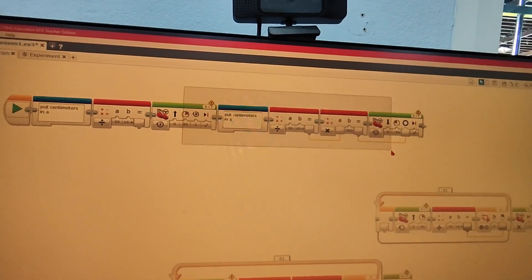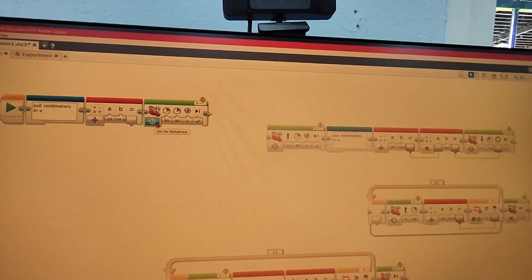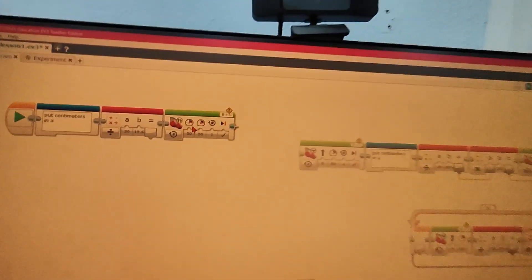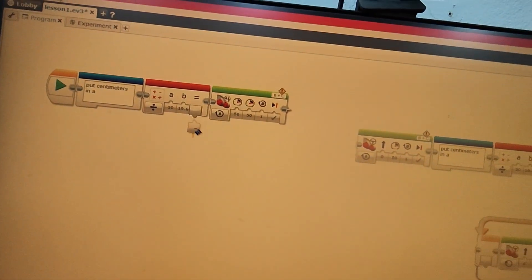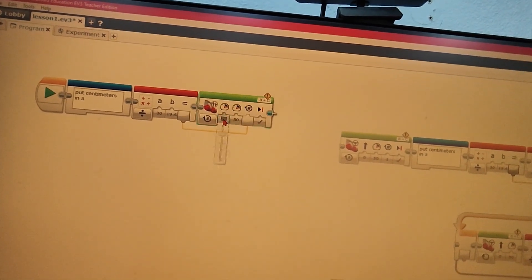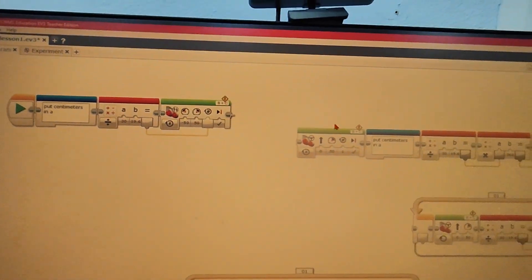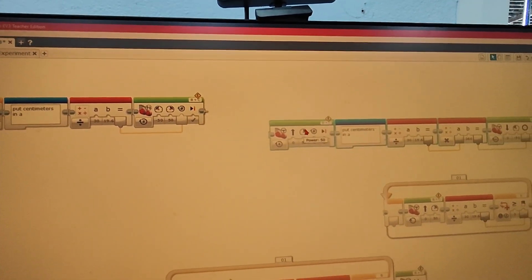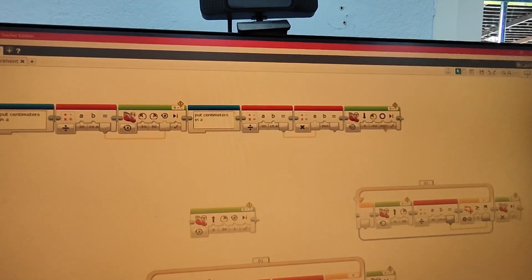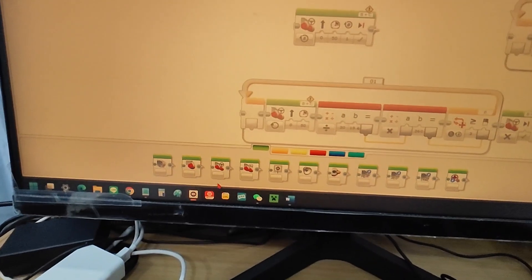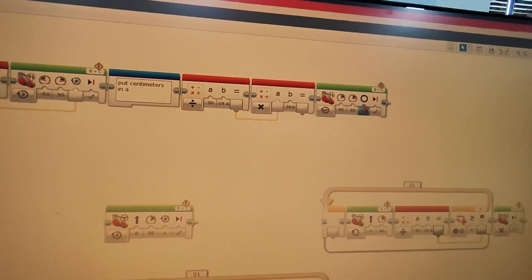In EV3G, if we want to alter the speed of two motors instead of one for movement, we need to use this move tank block. We just drag it up, and we pull the rotations in. We set this to the inverted speed, which is negative 50. And then, the same goes for the backwards block.